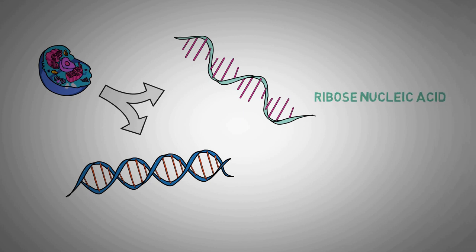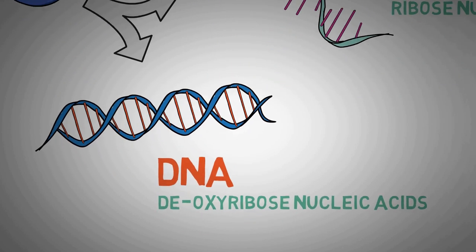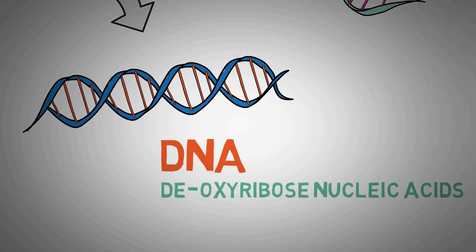The genetic material can be found in two forms: ribose nucleic acids (RNA) and deoxyribose nucleic acid (DNA). DNA is a two-stranded molecule found in all organisms such as animals, plants, and some viruses. It contains the genetic code, which is a blueprint of that organism.